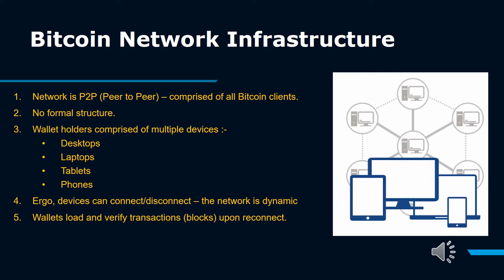For example, Stratum servers connect Stratum mining nodes via the Stratum protocol to the main Bitcoin network and bridge the Stratum protocol to the Bitcoin peer-to-peer protocol. We use the term extended Bitcoin network to refer to the overall network that includes the Bitcoin peer-to-peer protocol, pool mining protocols, the Stratum protocol, and any other related protocols connecting the components of the Bitcoin system.